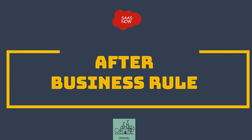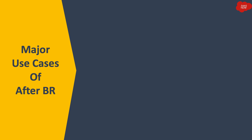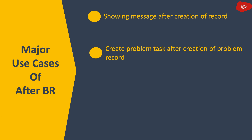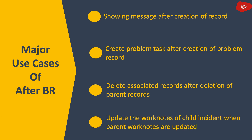You will learn what is an after business rule and how it works. An after business rule is triggered when a user submits the form and any action is taken on the record in the database. That means if you want to take some action after the user submits the form and data is saved in the database, then an after business rule is used. Major use cases include: showing a message after creation of a record, creating a problem task after creation of a problem record, deleting associated records after deletion of parent records, and updating work notes of a child incident when parent work notes are updated.